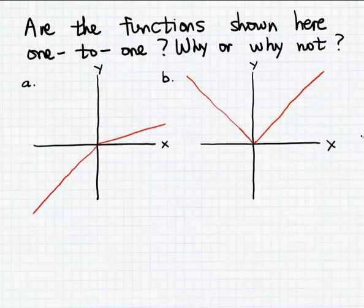Recall that a function is one-to-one if different inputs, different x values, always match different outputs, different y values. In other words, if different inputs, different x values, always match different output values, y values, then a function is said to be one-to-one.